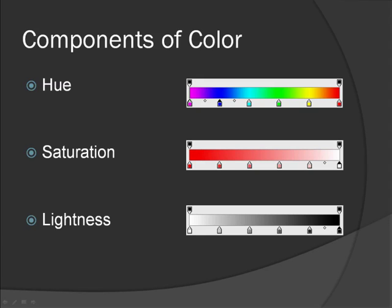The fact that color can, in theory, be separated into hue, saturation and lightness doesn't mean we have to manipulate colors in our photographs that way. Most photographers manipulate the pixels in a photograph using the RGB color model, but that's just one option for manipulating color in a photograph.